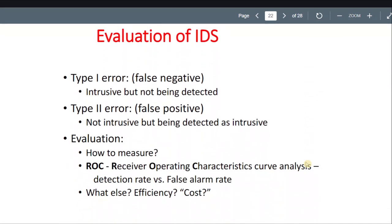Okay, so take them as is. If you want to go and buy an intrusion detection system, we have to learn this. We have a Type 1 error which is a false negative — there's an attack but it's not detected. And Type 2 error is also bad, which is a false positive — there's no intrusion but an intrusion is being detected.